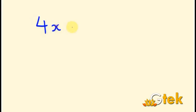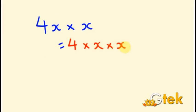Next example: 4X into X. That is 4X times X. Since X appears twice in the multiplication, X into X is X squared. So the answer is 4X squared.